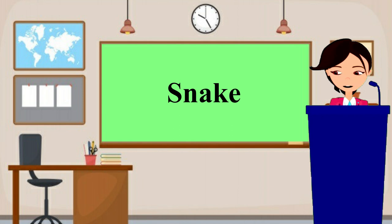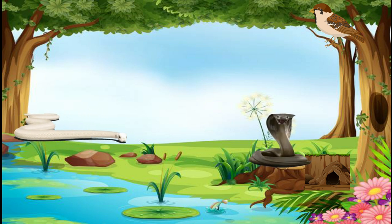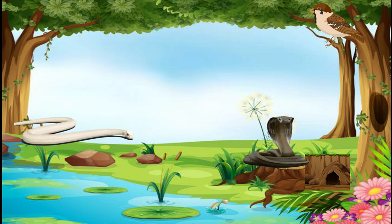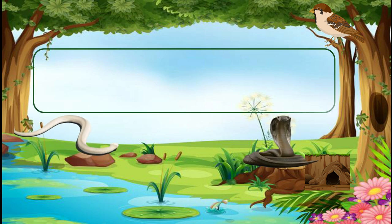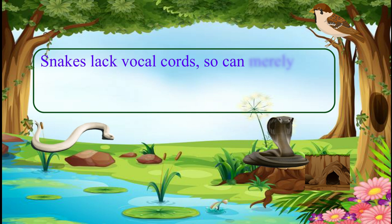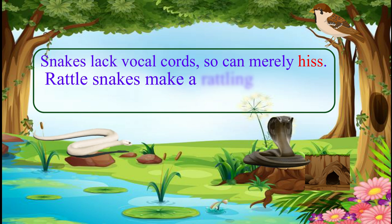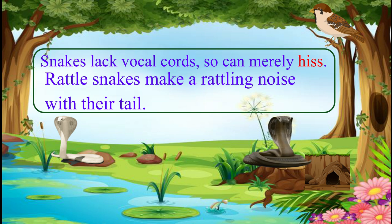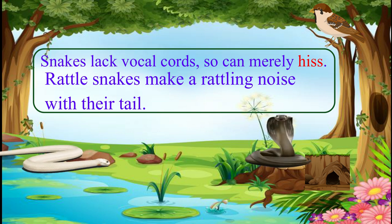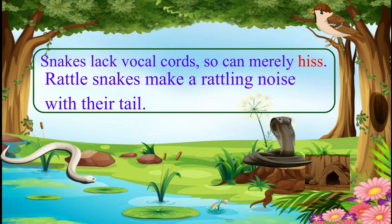So what sound do snakes make? Unlike humans, birds, and many other animals, snakes are not able to make many different sounds. Snakes lack vocal cords and can merely hiss. Some snakes have rattles and make a rattling sound with their tail to warn people or animals that get too close. The king cobra uniquely can make a growling sound due to the shape of its airways when it hisses.